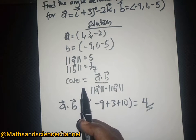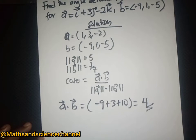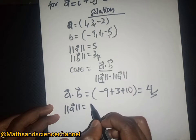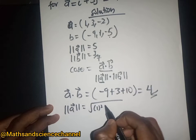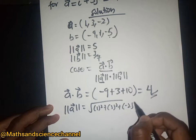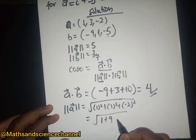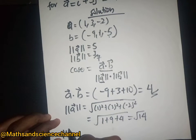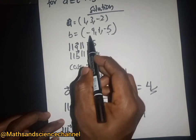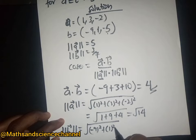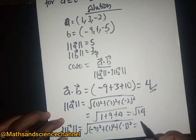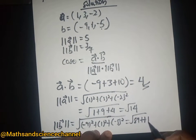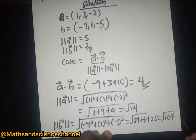Next we compute the magnitudes. The magnitude of vector a is √(1² + 3² + (-2)²) = √(1 + 9 + 4) = √14. The magnitude of vector b is √((-9)² + 1² + (-5)²) = √(81 + 1 + 25) = √107.